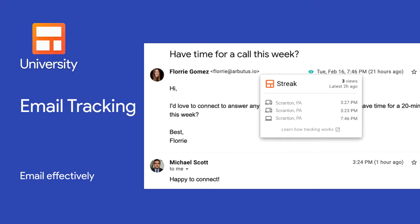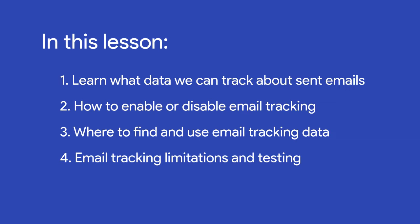Email tracking shows us when recipients open our emails and can include information about where and how they open the message. In this lesson, we'll learn exactly what data we can track, how to enable or disable email tracking, and where we can find our email tracking data. We'll also learn how we can use the data in our daily workflow, some of the limitations of email tracking, and how to test the feature.